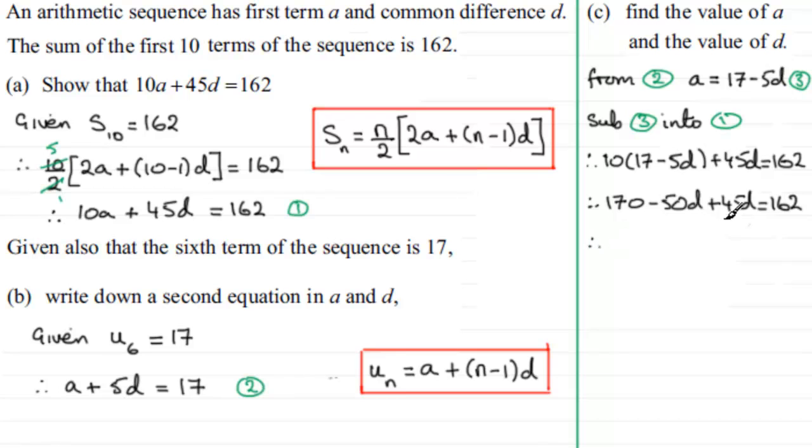I can see we could take 162 from both sides. So 170 take away 160 leaves us with 8. And then I've got minus 50D plus 45D. So that's minus 5D. Add it to both sides.